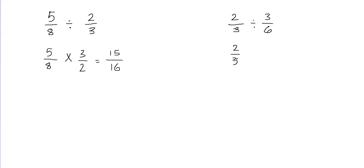We don't change the first fraction at all. We change the division sign into a multiplication sign, and then we turn the second fraction upside down. That means we just flip it. So the denominator becomes the numerator and the numerator becomes the denominator. So 3/6 becomes 6 over 3. We're done with the first step.